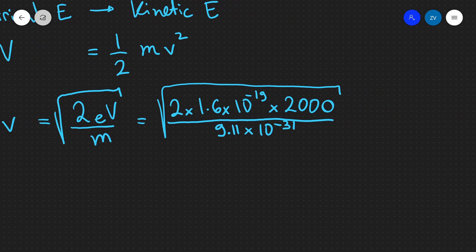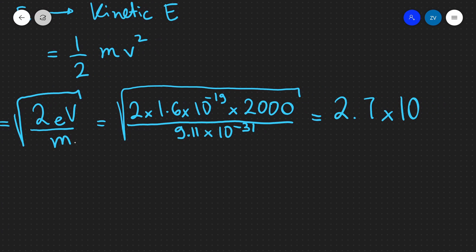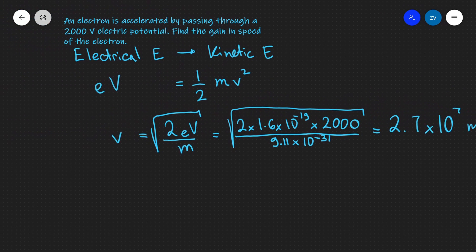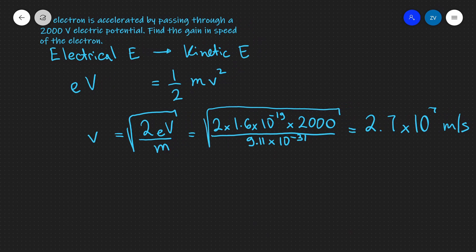All of these values are of course given in your formula booklet and if we input this into a scientific calculator we're going to get about 2.7 times 10 to the power of 7 meters per second. So this is the gain in speed of the electron when it's being accelerated through a 2000 volt electric potential.